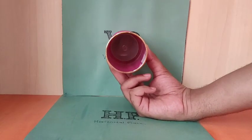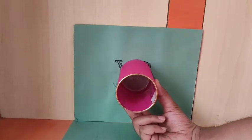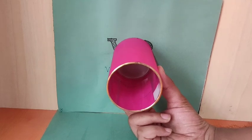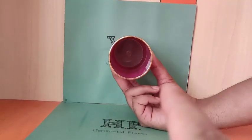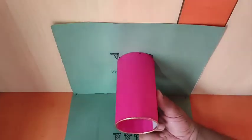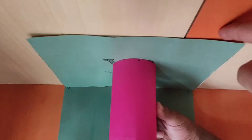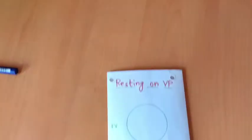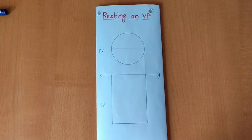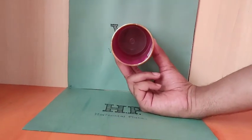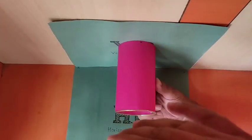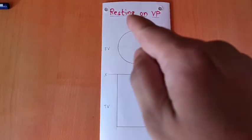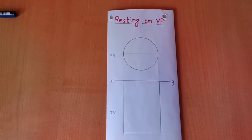This condition is called resting on VP. The same cylinder is resting on VP — it is directly placed on VP. In the front view above the XY line, you will be able to see the circle of the cylinder. In the top view, we will be able to see a rectangle exactly on the XY line. So above XY we see a circle in the front view, and below XY a rectangle in the top view — this condition is resting on VP.